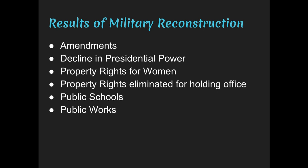The results of military Reconstruction include the 14th and 15th Amendments, a decline in presidential power over the following decades leading into the Gilded Age when Congress and big business held much more power, property rights for women, some public schools created, an improved tax system, and public works launched especially in transportation. These are some definite positives that came out of military Reconstruction.